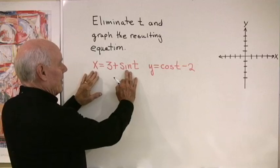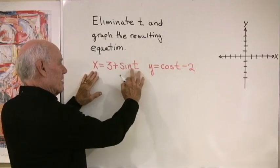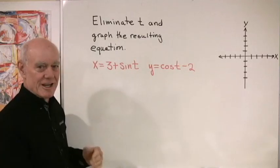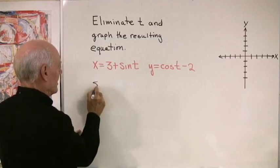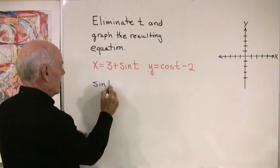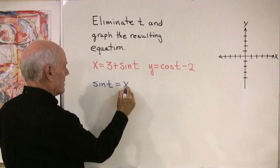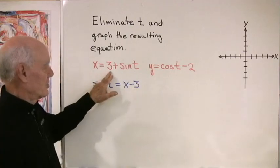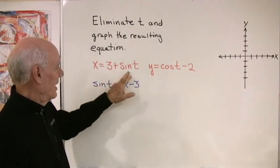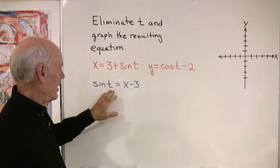So I'm going to start over here, and I can't solve for t directly, but I can solve for sine t. So I'm going to do that, and I'm going to say sine t is equal to x minus 3. So I just subtract 3 from both sides, I get sine t is equal to x minus 3.